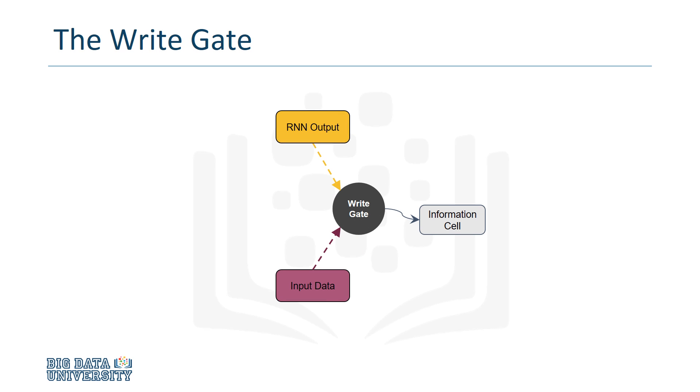The write gate is responsible for inputting new data into the memory cell. Like the keep gate, it receives the same input data and state as the recurrent network. However, it also receives the recurrent net's output data from the most recent time step. The write gate uses the inputs to determine how much of the output data should be written into the memory cell.